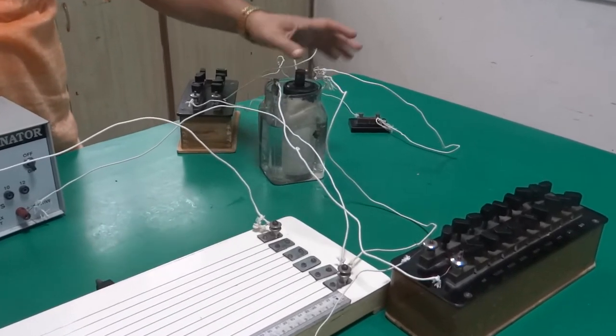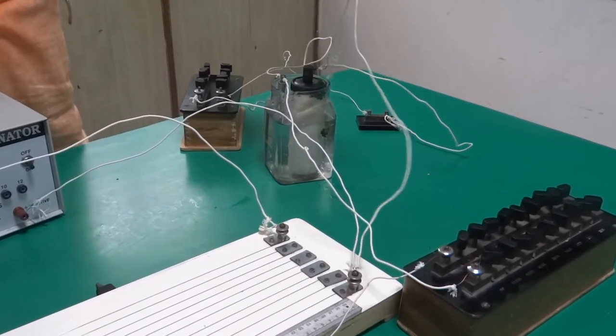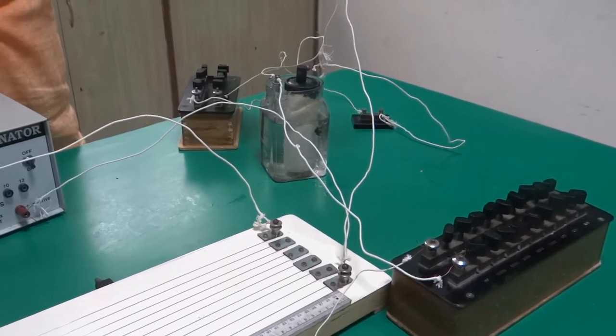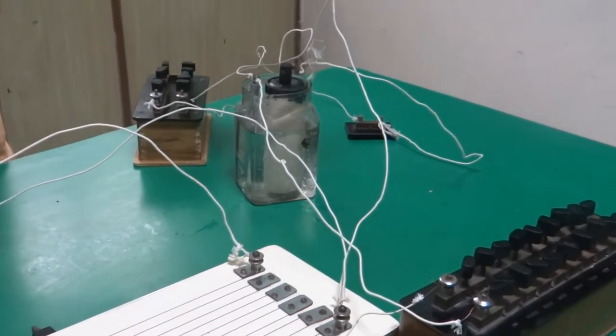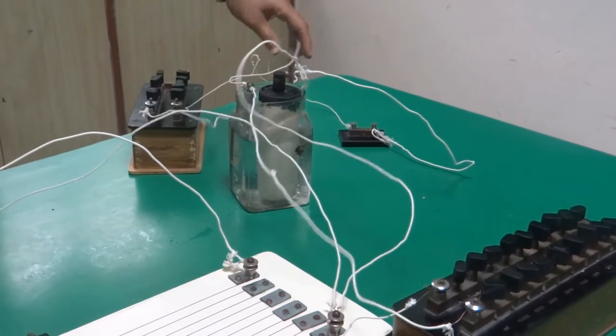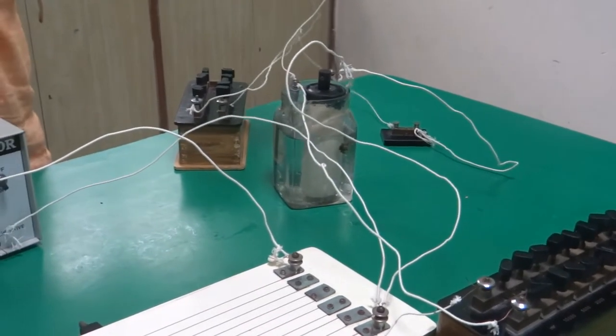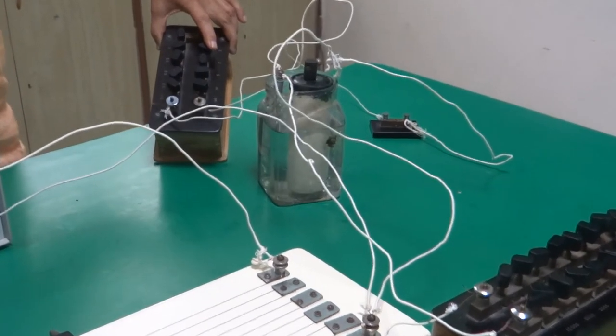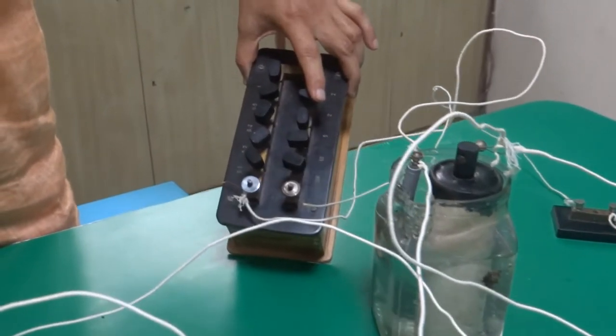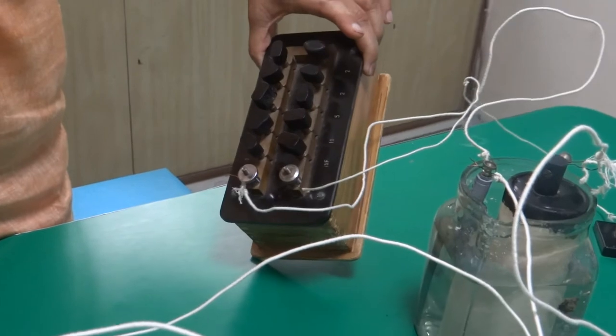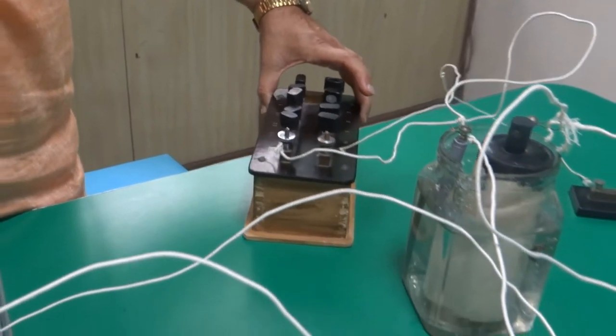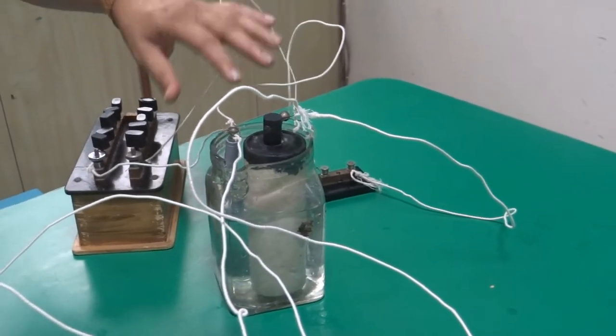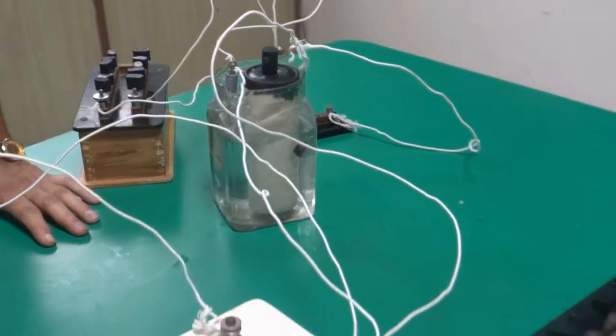Earlier we used two cells. Now we have one cell, that is Leclanche. Positive terminal is connected right at that terminal where positive terminal of battery eliminator is connected. Negative terminal is connected to a rheostat box. Remember this should be a small resistance box. Its range here you can see is going till 10 ohm. And then there is a key. This resistance box and key is connected in parallel to the Leclanche cell.